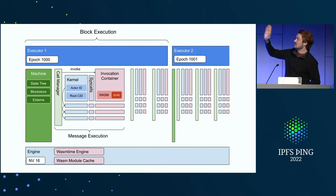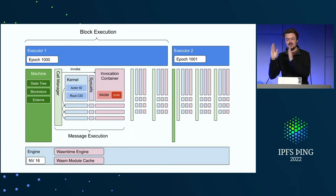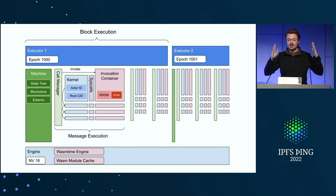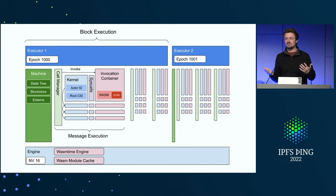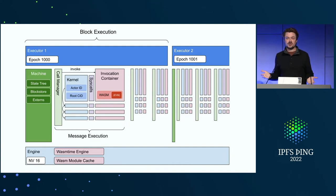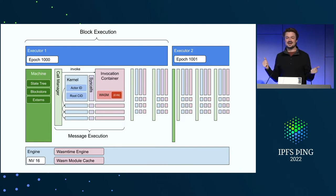This pattern is repeated — for each message we create a new call manager, all within the same process. When we're done with the block, we move to the next block with a new executor and everything starts over. At the very bottom there's an engine — a common WASM caching layer that caches compiled WASM modules because they can be expensive to compile. That's the general architecture. I made this in case you're interested in contributing to the code — it explains how everything works, because jumping straight into the code is very difficult.